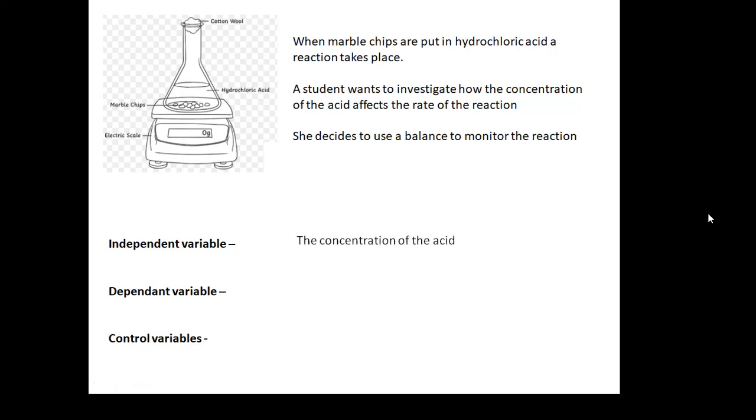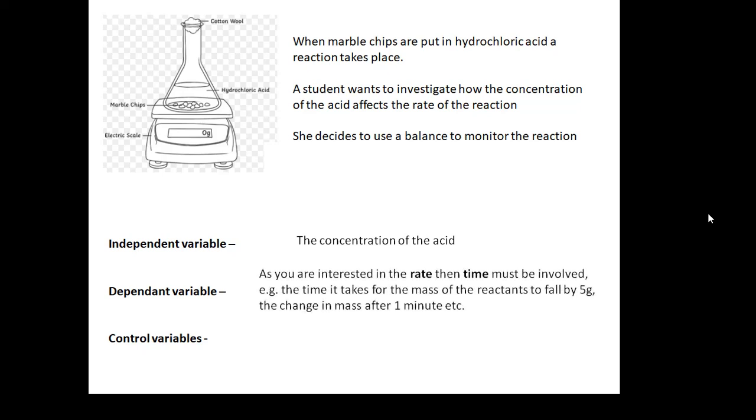Our independent variable is the concentration of the acid. Dependent variables, we're interested in the rate, so time has to be involved. What you could do is time how long it takes, or the time it takes for the mass of the reactants to fall by 5 grams. Or you could measure the change in mass after a minute. If you divide the change in mass, because the mass is going to go down, by a certain time, that will tell you, it will give you an indication of the rate of the reaction.